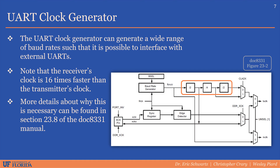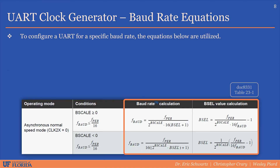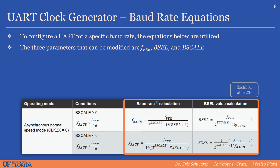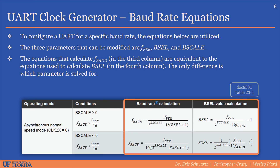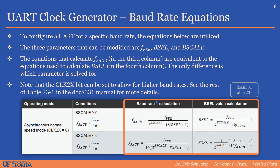More details about why this is necessary can be found in section 23.8 of the DOC 8331 manual. To configure a UART module to operate at a specific baud rate, the equations in the table shown here are utilized. The three parameters that can be modified are the peripheral clock frequency, baud select, and b-scale. The adjacent equations in the third and fourth columns are equivalent, but in the third column the baud rate is calculated and in the fourth column a baud select value is calculated. Note that the clock 2x bit can be set to allow for higher or doubled baud rates.